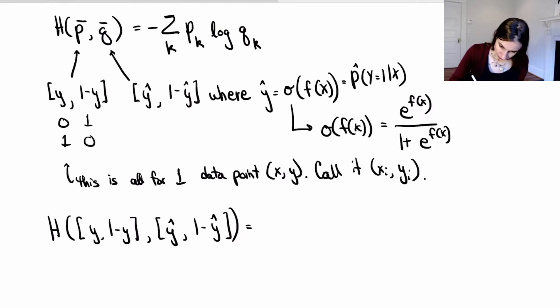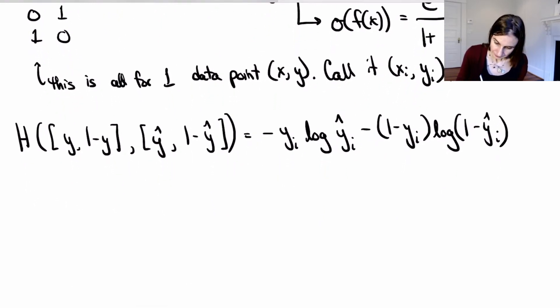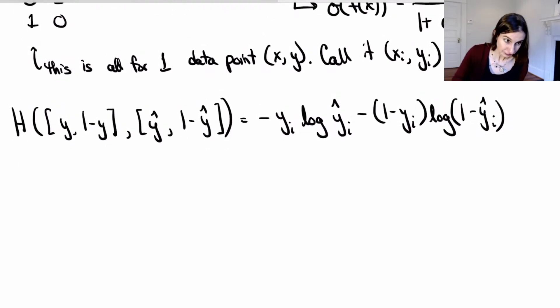So let's write this down. So it is negative y_i log of y_i hat minus 1 minus y_i log of 1 minus y_i hat. Let's put y_i hat into this and we'll see what happens.